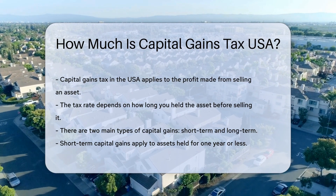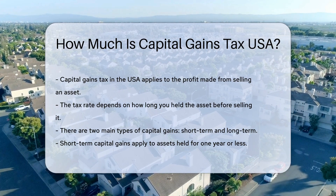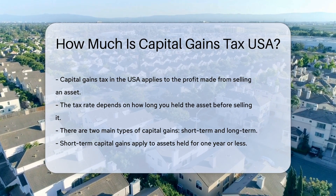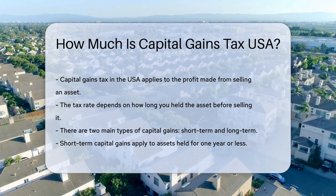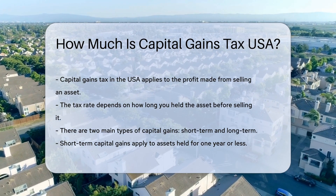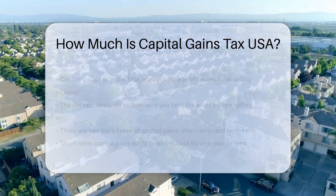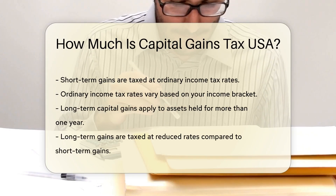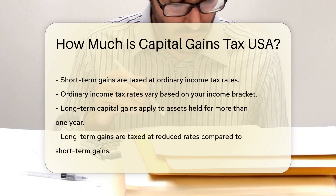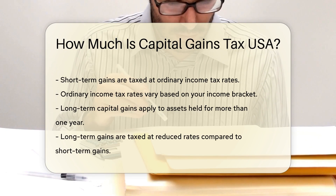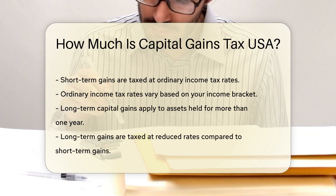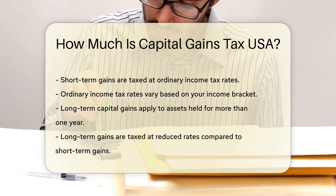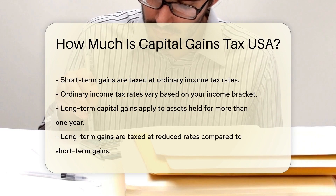Short-term capital gains apply to assets held for one year or less. These gains are taxed at ordinary income tax rates, which vary based on your income bracket. Long-term capital gains apply to assets held for more than one year, and these gains are taxed at reduced rates compared to short-term gains.